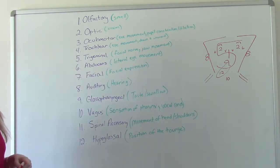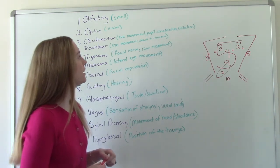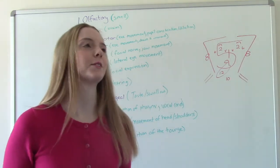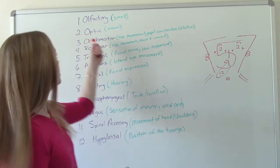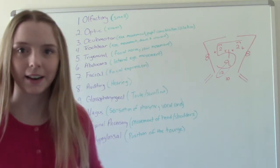Number three is our oculomotor. So this is movement of the eye and pupil constriction and dilation. So this is what we're testing when we're doing PERLA. This isn't the only thing we're testing when we're doing PERLA. But when you're doing PERLA, you're also doing number three. Done. Easy. You're already doing this assessment anyway.